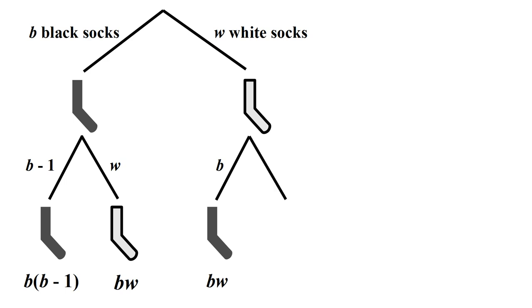We could also have picked out a white sock on the second draw. Since we've already picked one white sock, there are W-1 white socks remaining. If we multiply these two numbers, we get W times W-1 is the number of ways to pick two white socks in a row. So how does this help us solve the problem?